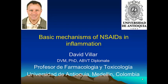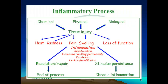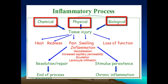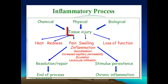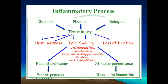If we start with this simple scheme of an inflammatory process, we could say that inflammation is basically a non-specific response of the organism when it's challenged with either a chemical, physical, or biological harmful stimulus that causes a tissue injury. The five cardinal signs typical of inflammation are heat, redness, pain, swelling or edema, and loss of function.